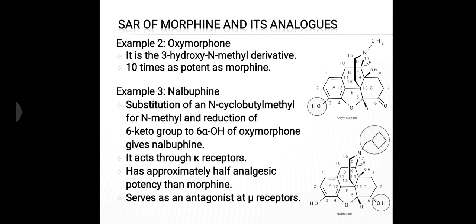The second example is oxymorphone. Comparing oxycodone and oxymorphone, there is only one change: at the third position, in the case of oxymorphone, a hydroxyl group is present instead of a methoxy group.